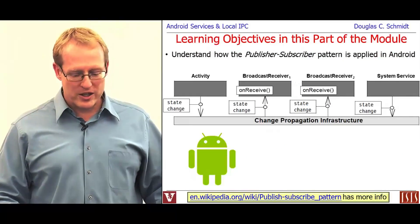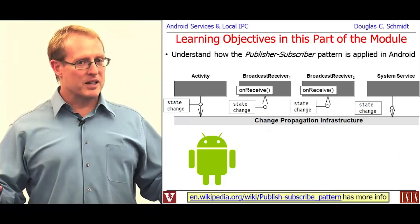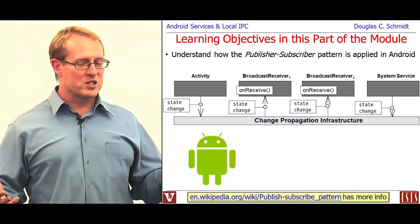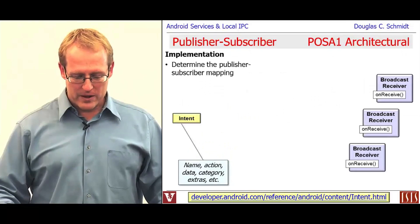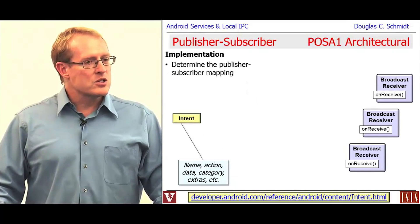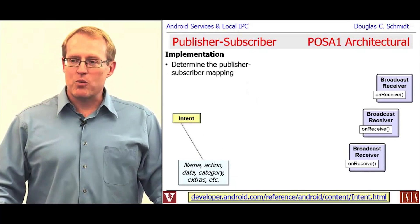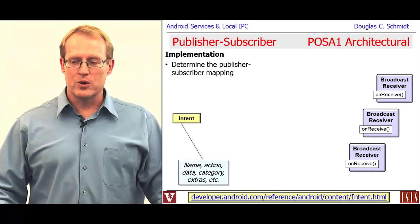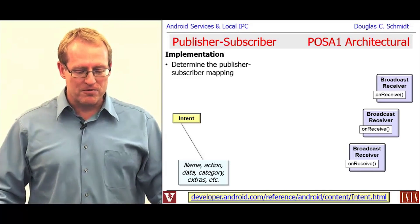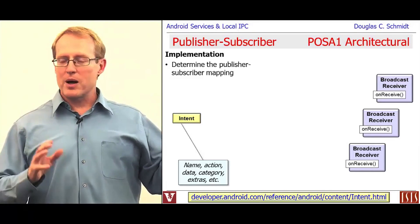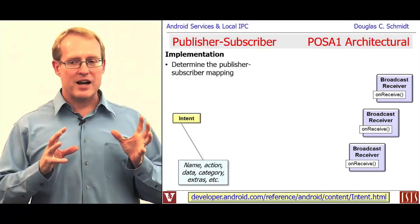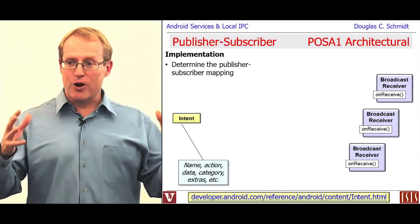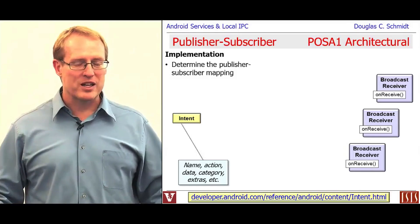Let's talk about how you would actually implement the Publisher-Subscriber pattern in Android. There are a bunch of different ways to do it, so we're just going to focus on one. First, let's talk about what it means to implement the pattern. There are a bunch of steps, one of which is you have to define or determine what the publisher-subscriber mapping is — how do publishers and subscribers interact, and what's the means by which they communicate?